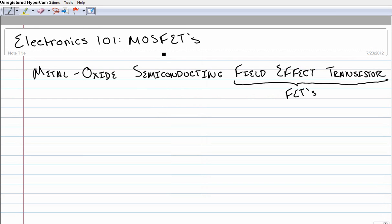MOSFET is a certain kind of transistor. If you remember last time we talked about the BJT, the bipolar junction transistor. Now we're going to be talking about FETs, MOSFETs in particular. MOSFET stands for Metal-Oxide Semiconductor Field Effect Transistor. It's the field effect transistor that makes this a FET.